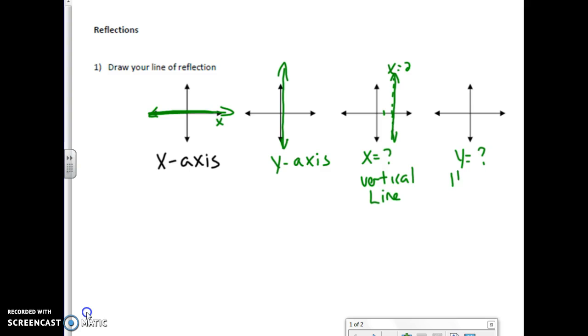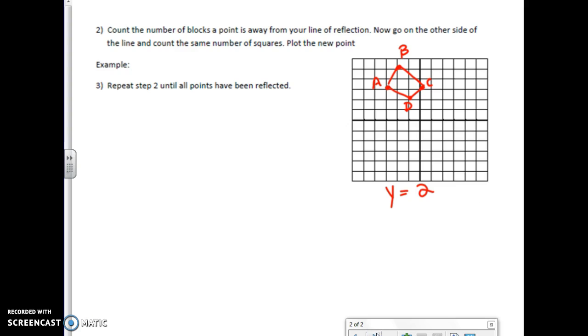Y equals is going to be a horizontal line through that specific value. So we always want to draw our line of reflection first. So looking at the example that I have for you guys, I didn't write it down, but we're going to be reflecting it over y equals 2.